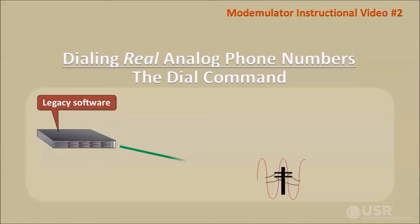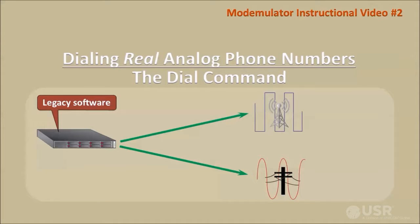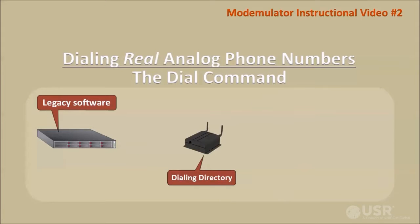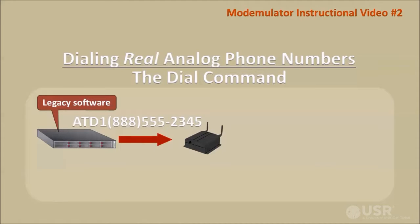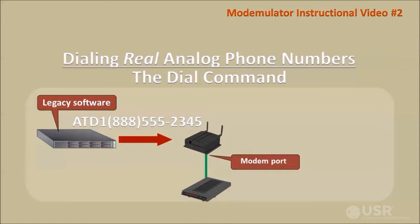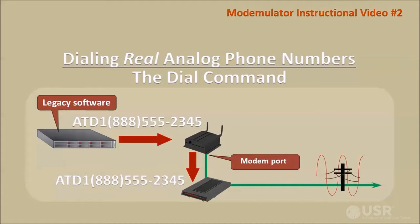If the application must make connections to legacy analog sites as well as cellular sites, the Modemulator's dialing directory must not contain the phone numbers of the analog sites. When the dial command is dialing a real analog phone number, and if an analog modem is connected to the Modemulator's modem port, the dial command will automatically pass through to the analog modem, which will attempt to contact another analog modem over the dial-up telephone network.